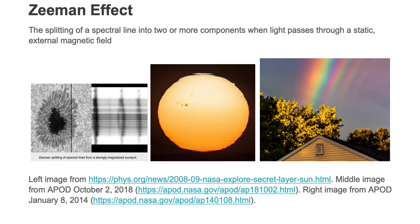The Zeeman effect is the splitting of a spectral line into two or more components when light passes through a static external magnetic field. Let's build on this Zeeman effect.